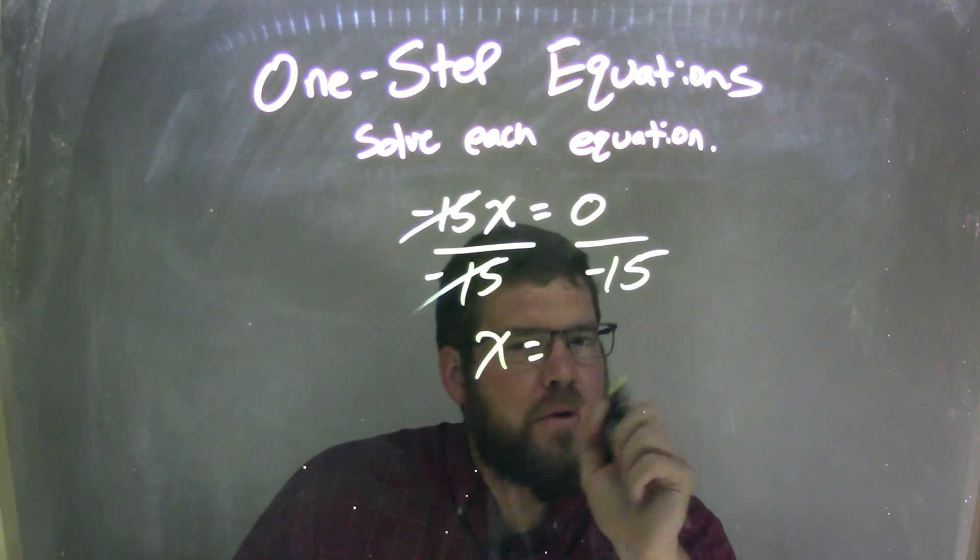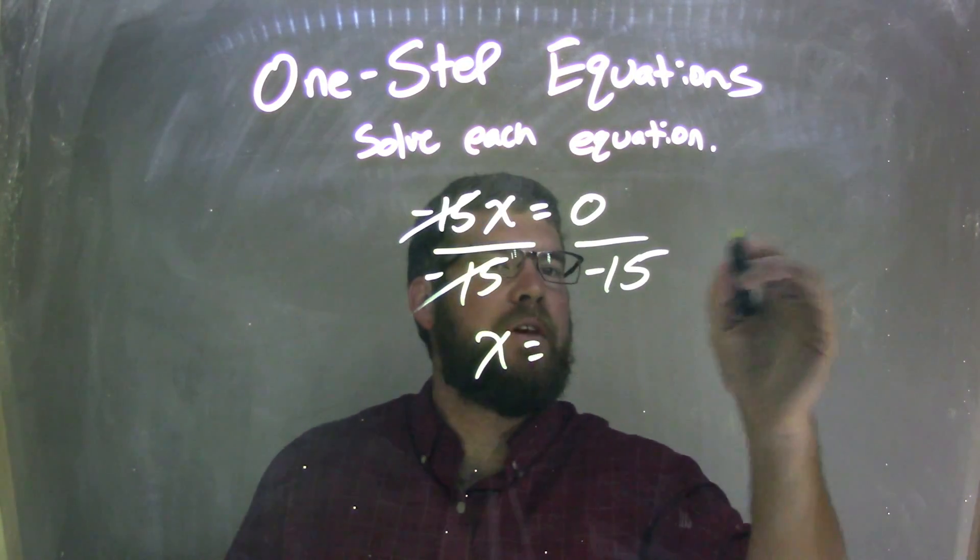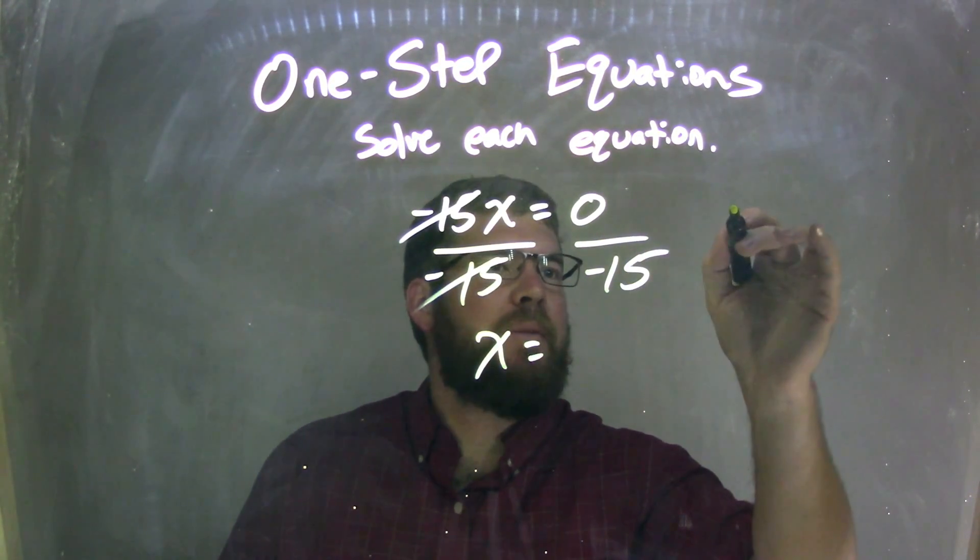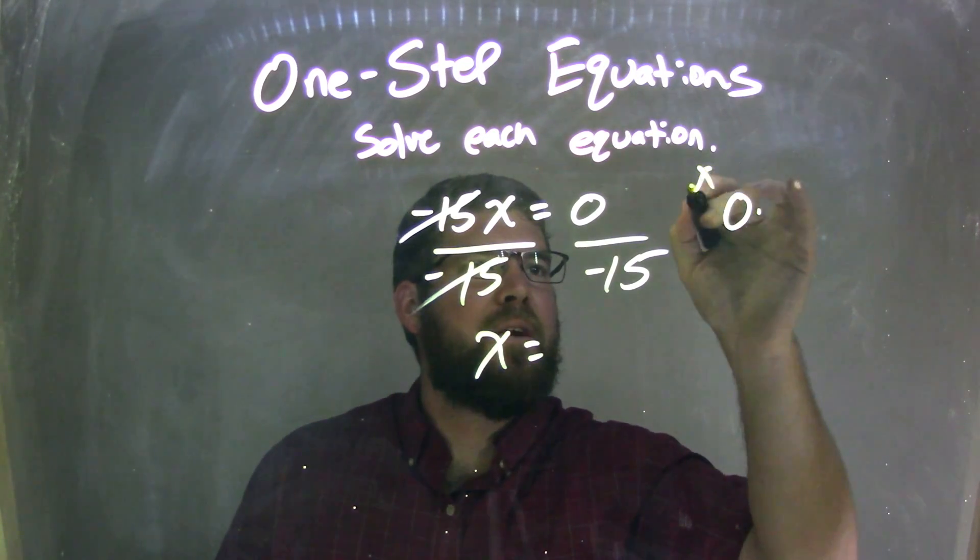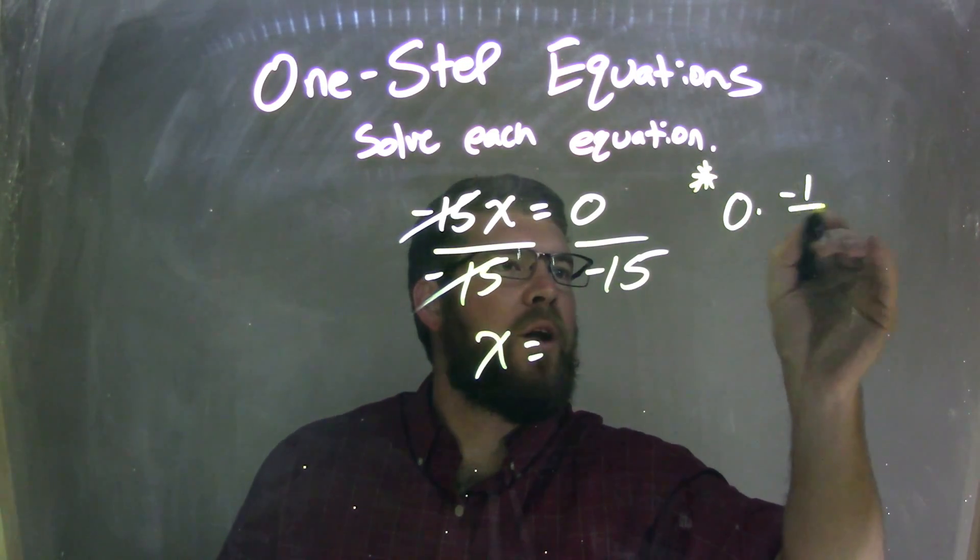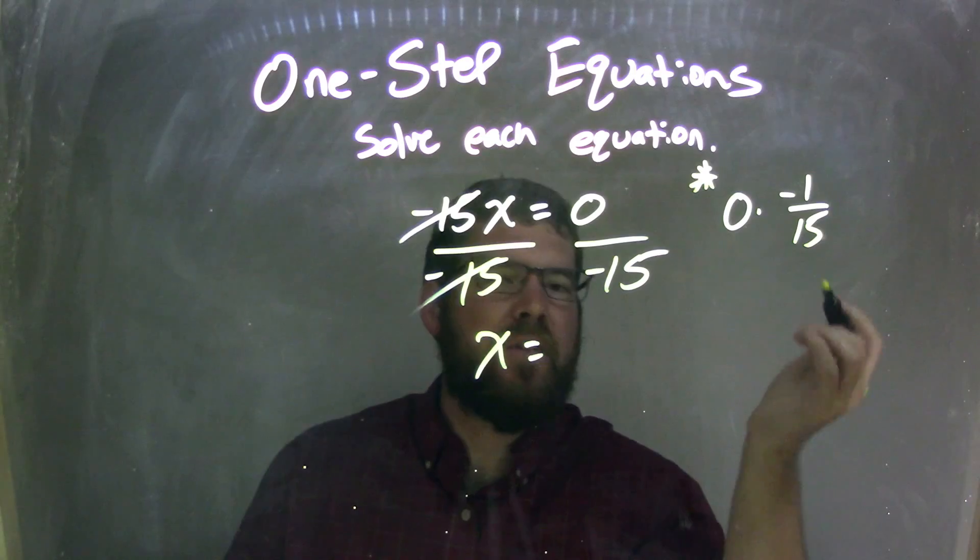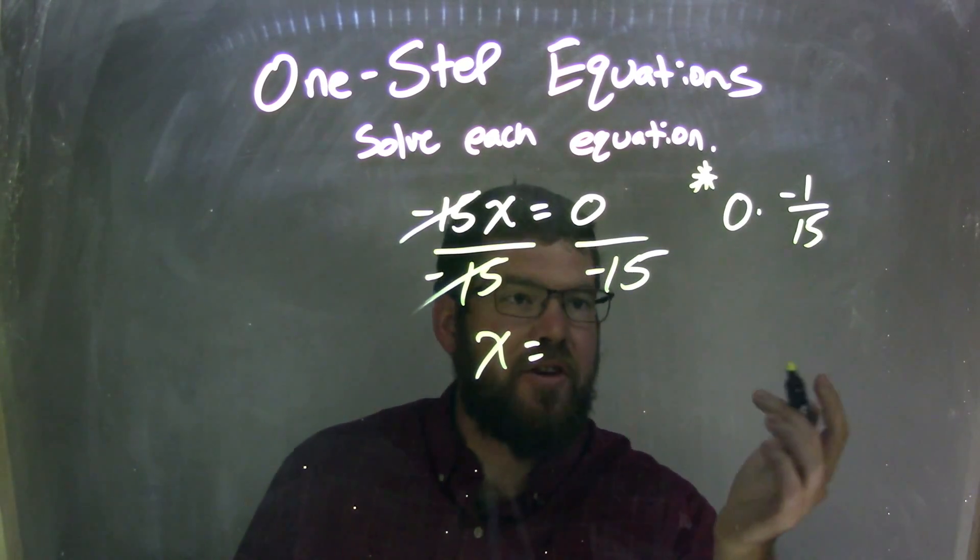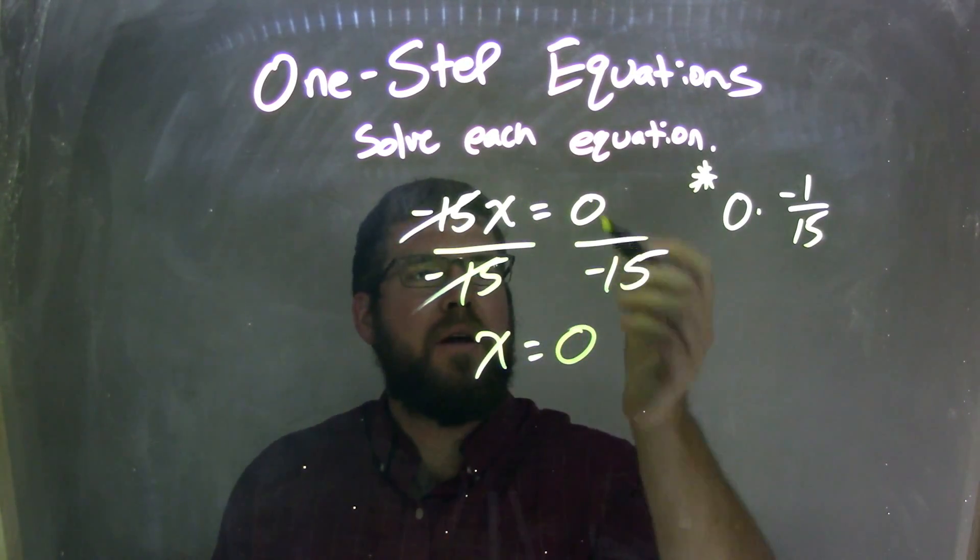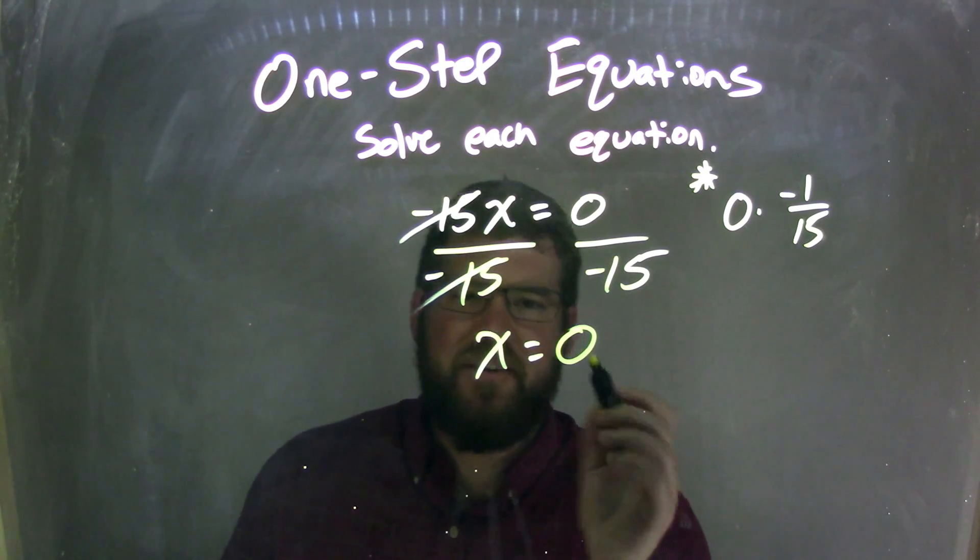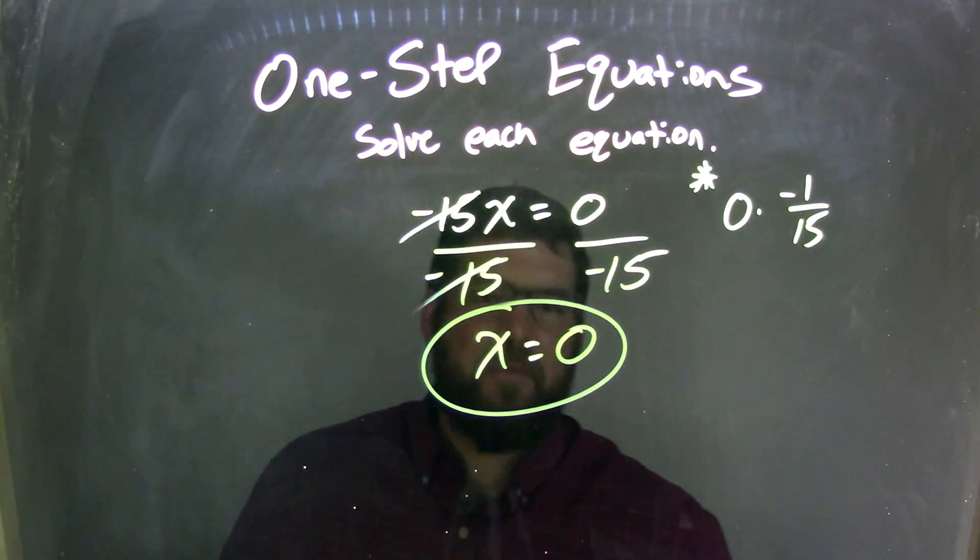That kind of throws you off for a second. Let's think about this. Divided by negative 15 is the same thing as 0 times negative 1 over 15 - a little side note here. And what's 0 times anything? 0. So 0 over negative 15 is just 0, and x equals 0 is my final answer.